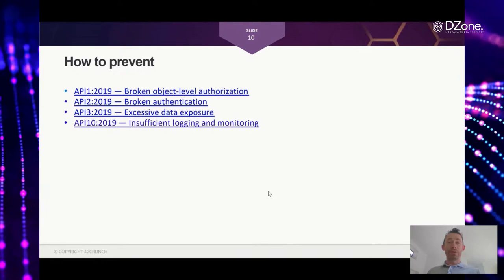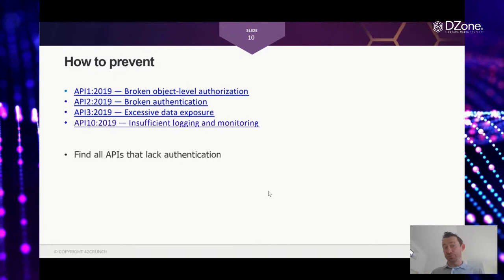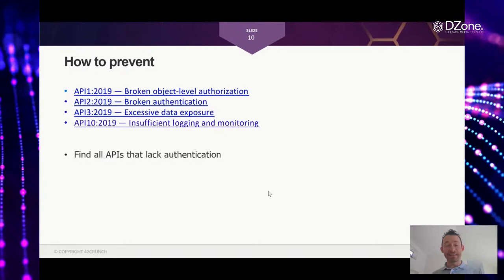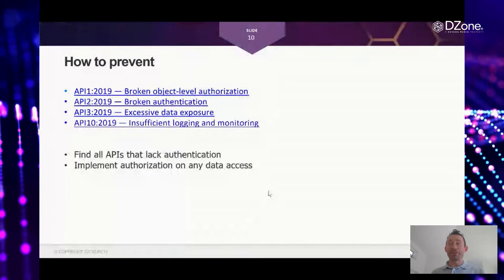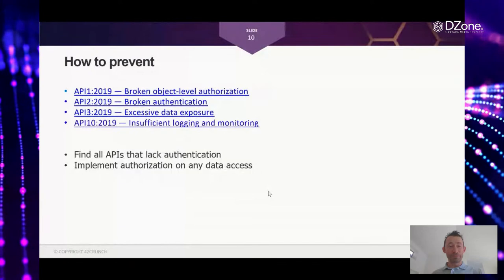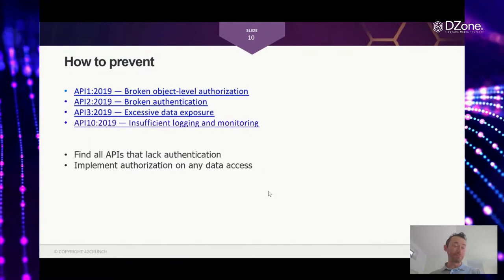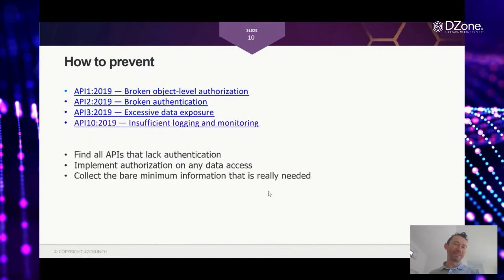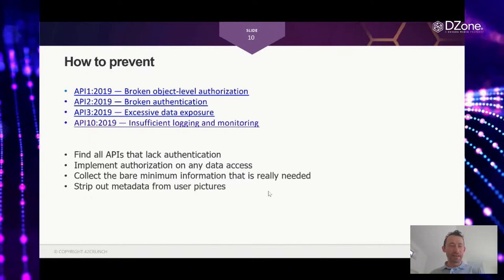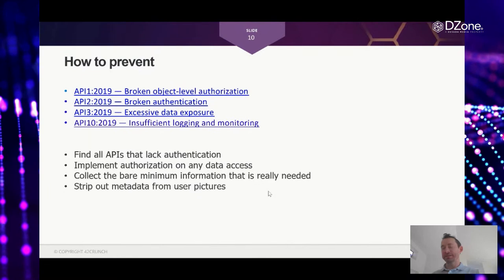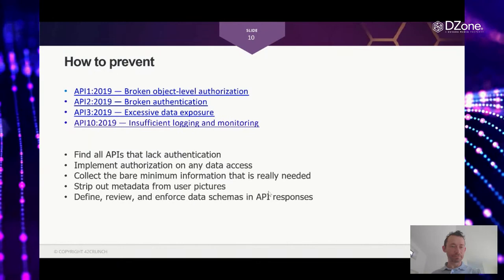The OWASP API Security categories here are: broken object-level authorization (BOLA/IDOR), broken authentication, excessive data exposure, and insufficient logging and monitoring. To prevent these: do API discovery and find all APIs that lack authentication and authorization; remember there is no such thing as an internal API — all APIs can become external. Implement proper authorization separate from authentication. Collect only the data you need, strip out all metadata, and define exactly what your APIs expose.